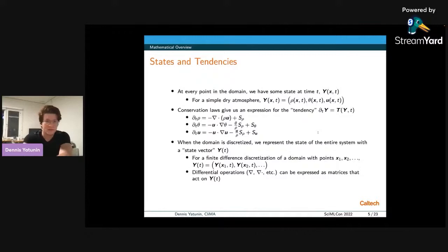And when the domain is discretized, we represent the state of our system with a state vector. For the finite difference case, this is going to be the state at every single location of our finite difference discretization for spectral element. This will be the coefficients of the polynomials in every element. And when we do this discretization, differential operators can then be expressed as matrices that act on Y of T. And we're going to come back to that when we talk about the Jacobian computation.